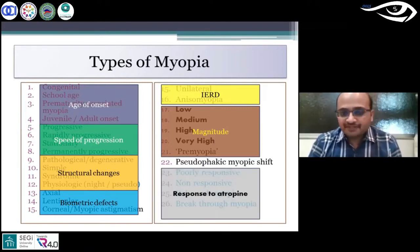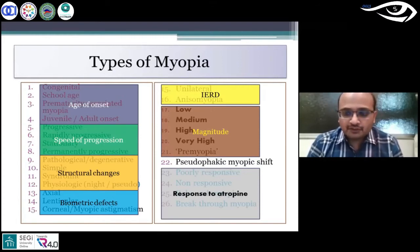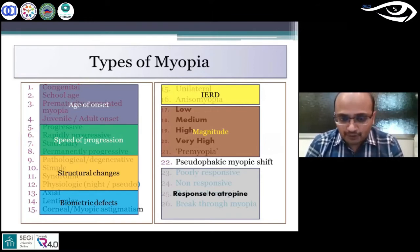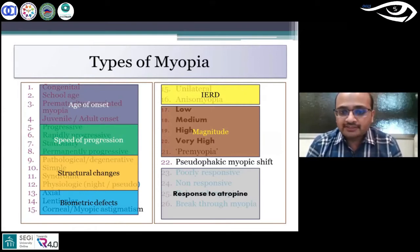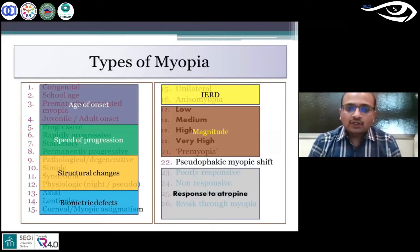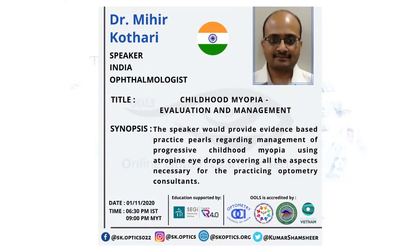Pseudophakic myopic shift is a spectrum, and now with the use of atropine for treatment of myopia, you can classify myopia based on response to atropine: myopia that has poor response to atropine, myopia that is just not responsive to atropine, or a breakthrough and rebound myopia. Thank you.